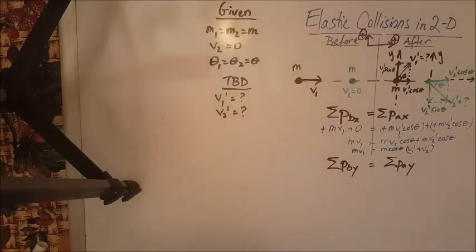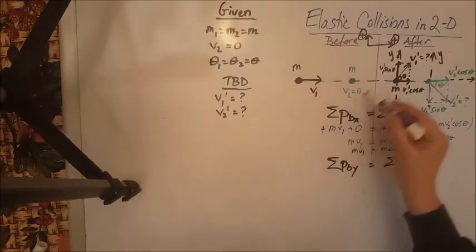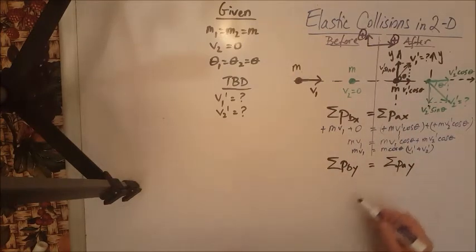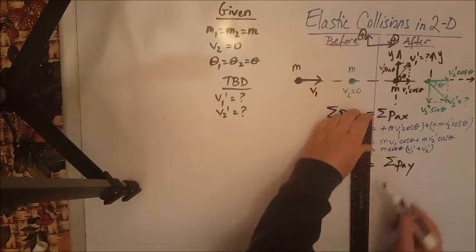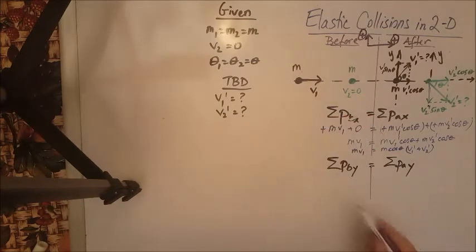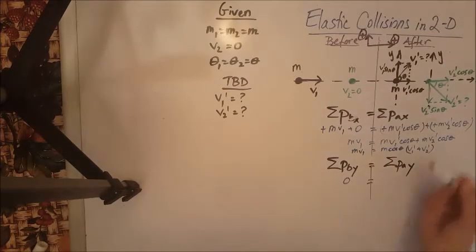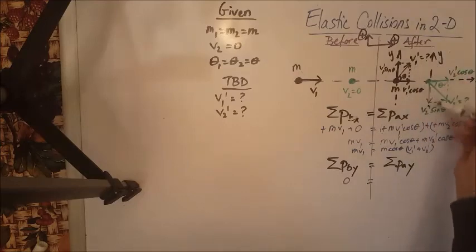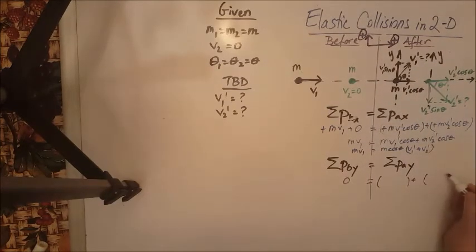For the y, let's go ahead and do the same thing and look at the equations for the y. Before collision, there is no y vector. Therefore, we have a zero here. So on the y, there is no before y momentum. After, we have two: one going up, one going down. So we are going to have a sum of two vectors.